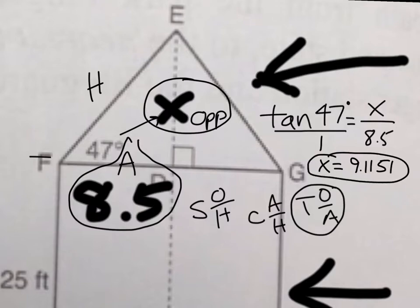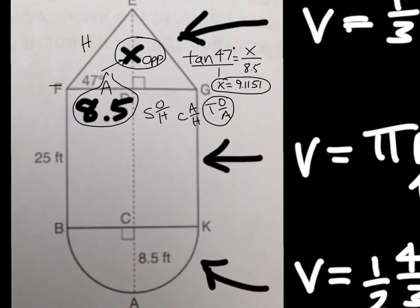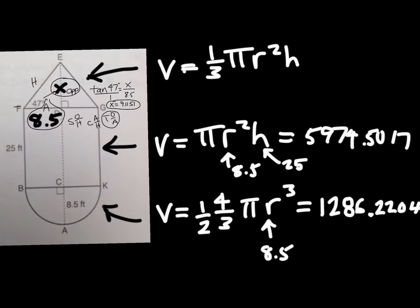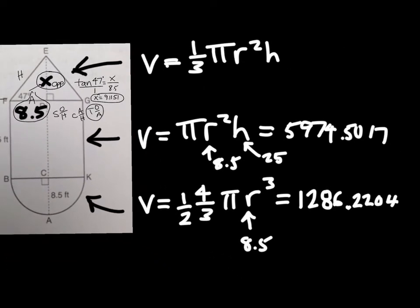And that would be the height of the cone. There's a little wrinkle in the question that makes it more complicated. So now that I have the height of the cone, I can place it into the formula. So 9.1151 will go there. The radius is still 8.5. Plugging that into the calculator will give me that the volume of the top section of the water tower is about 689.6510.